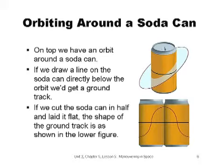This line is the spacecraft ground track and represents the point directly under the spacecraft. When we cut the soda can in half and flatten it, the ground track of the spacecraft forms a nice symmetrical wave around the equator. After class, why don't you go get a soda and think about it?